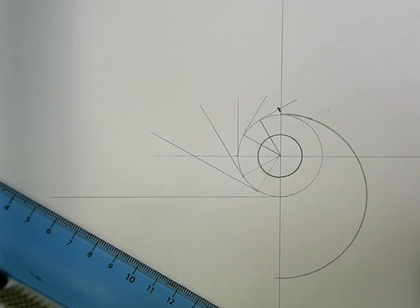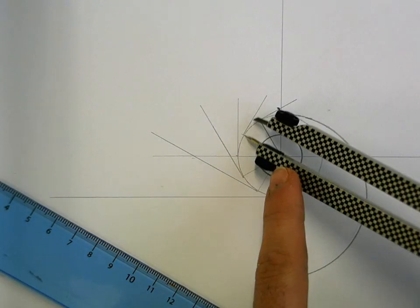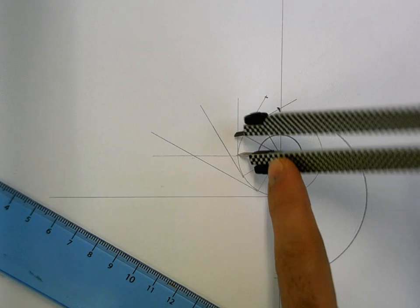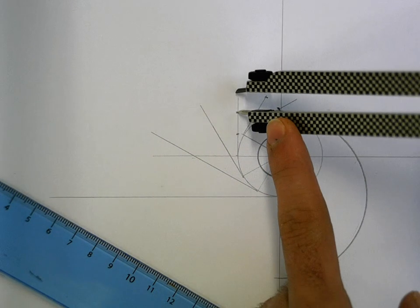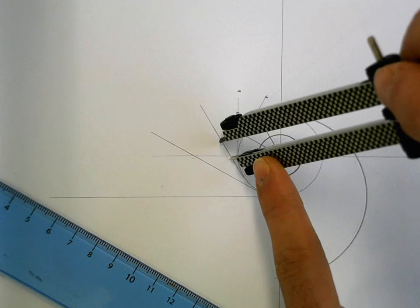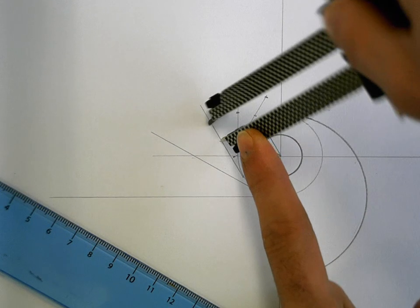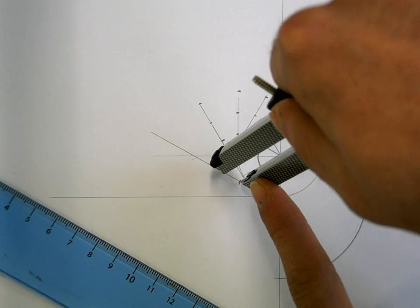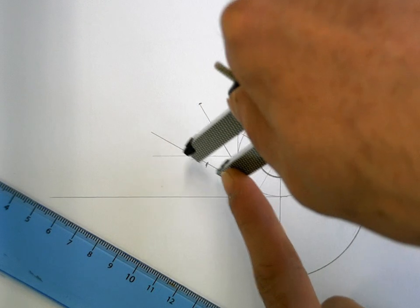On the second one, we're going to mark off two segments. On the third one, we're going to mark off three. Four segments on the fourth line, five on the fifth, and finally when you get down to the last line, you'll be marking off six segments, and that will find point B for you.